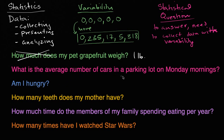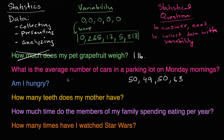Next question: what is the average number of cars in a parking lot on Monday mornings? To answer that, I would have to go out to the parking lot on multiple Monday mornings and measure the number of cars. On the first Monday I might see 50 cars, the next Monday 49 cars, then 50 again, then 63 cars. I'm collecting multiple data points, and it's definitely possible that there could be variability. So this is a statistical question.